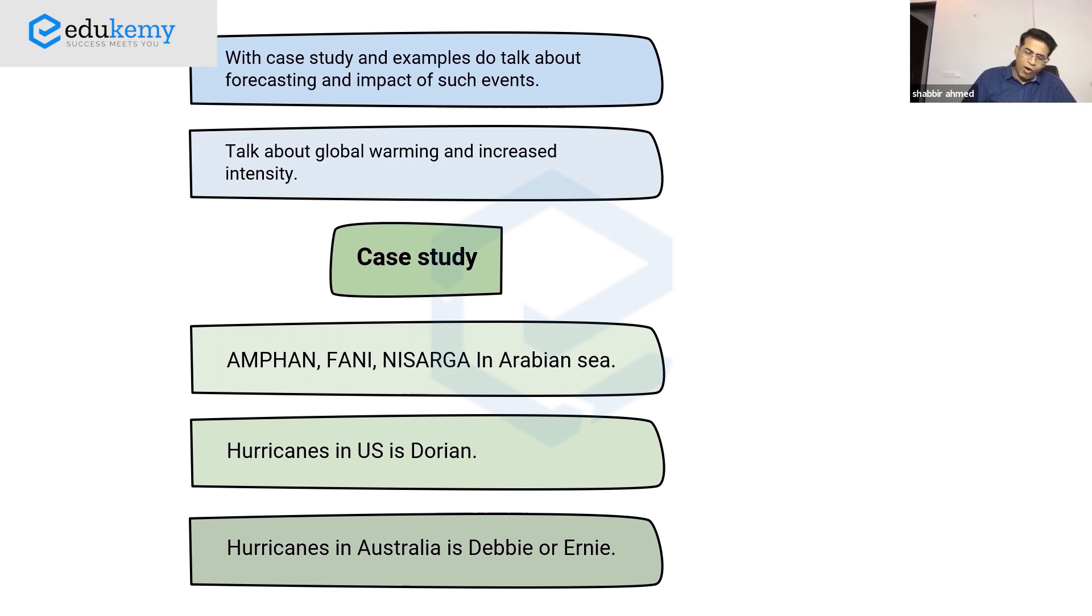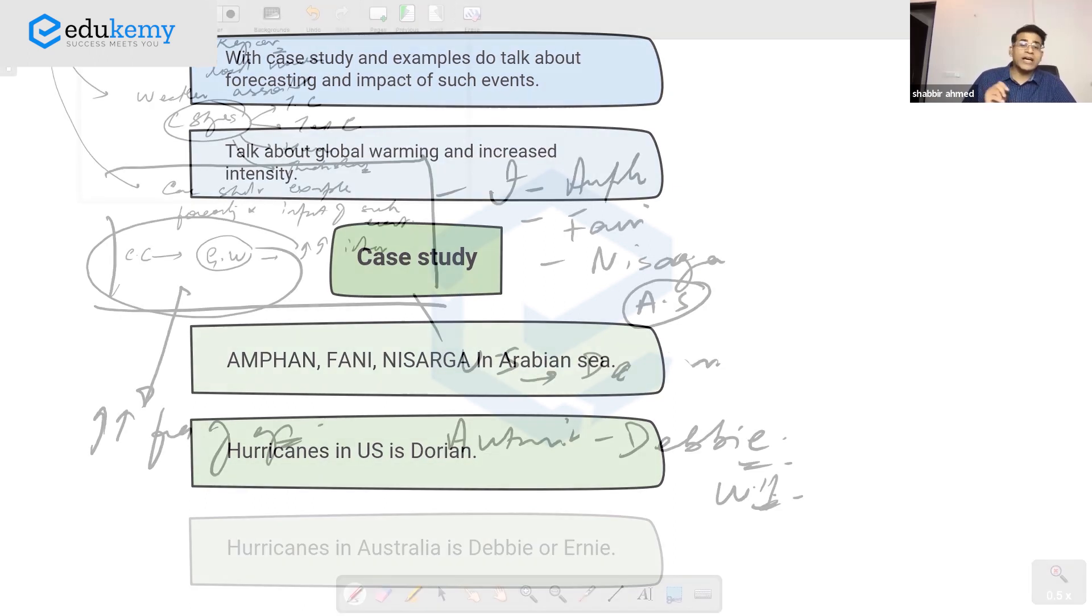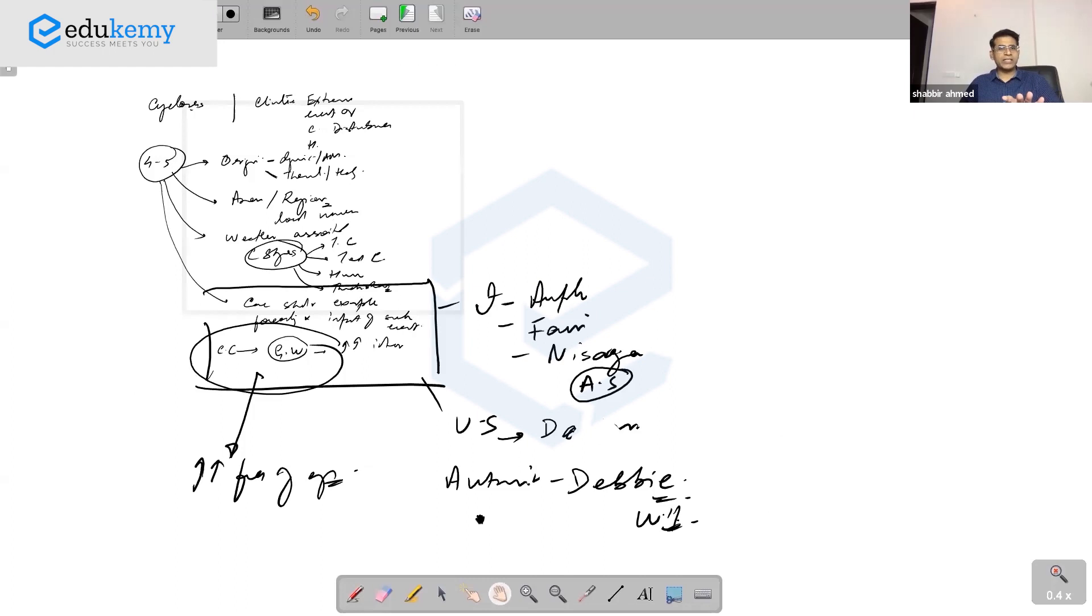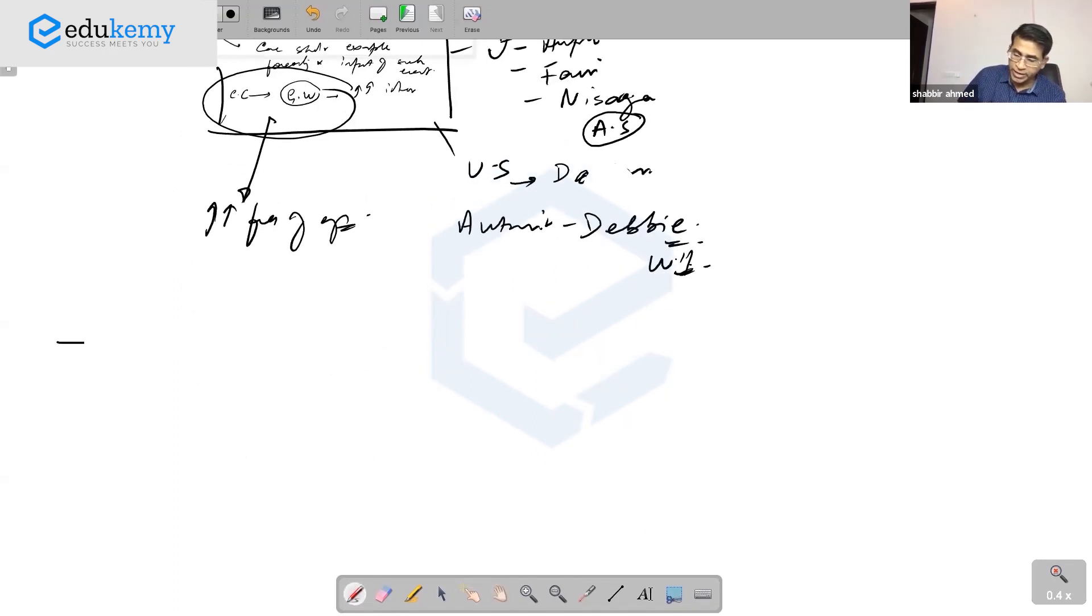Also discuss how global warming and climate change are increasing the frequency of cyclones and hurricanes. So if there's discussion on cyclones, this is the format of your answer. Talk about the origin mechanism. It's possible they ask you very specifically - the question might say 'discuss'.